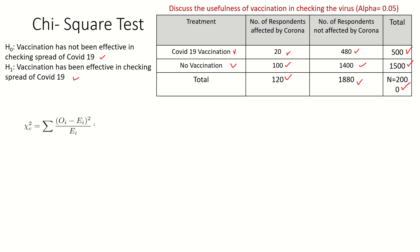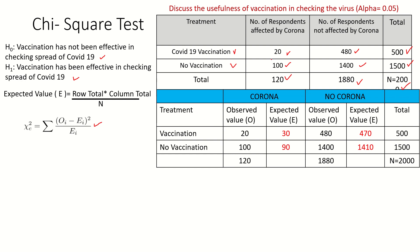The chi-square calculated formula is: the sum of (observed value minus expected value) squared, divided by E, the expected value. We will understand this once we prepare the table. The observed values are: 20 for vaccinated and affected, 100 for not vaccinated and affected, 480 for vaccinated and not affected, and 1400 for not vaccinated and not affected.